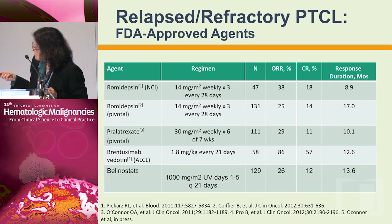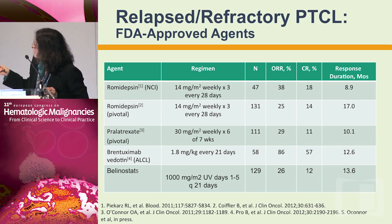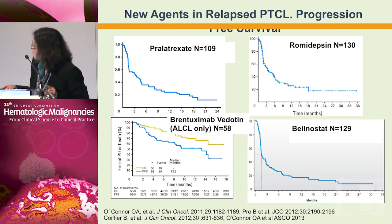The FDA-approved therapies are romidepsin, pralatrexate, brentuximab, and now belinostat. Looking at overall response rates across these agents, if you eliminate brentuximab — which was studied specifically in anaplastic large cell lymphoma patients — the overall response rates are quite similar, with perhaps some difference in response duration favoring the HDAC inhibitors. These studies had slightly different patient groups, although most were relapsed and refractory, and what they demonstrate are signals of activity among these different agents.